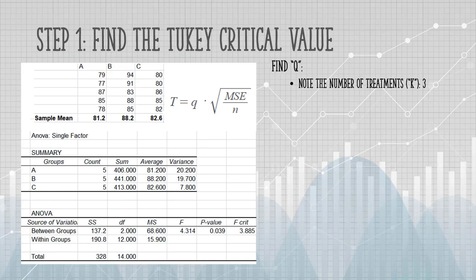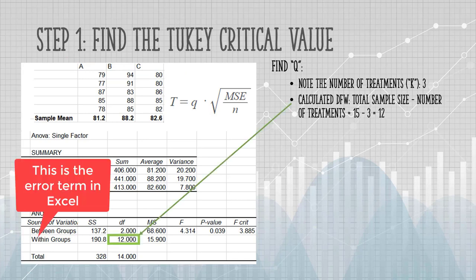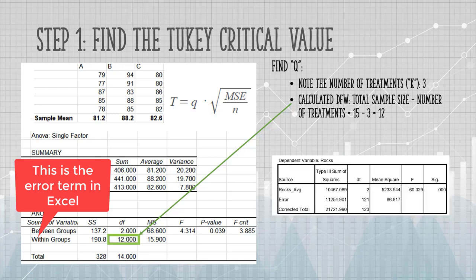The second piece of information we need is the degrees of freedom within groups, that's 12. Now I'm using Excel for this output, and in Excel this row is the error term. If you're using a different type of software, like SPSS or JMP, you might see something a bit more explicit that it's the error term. For example, this SPSS output clearly labels the error, but in Excel you want to look at the within groups row.